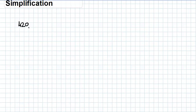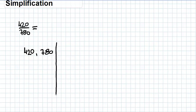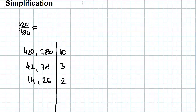When a fraction has very large numerator and denominator, we try to simplify it. For example, 420 over 780. We look for the greatest common divisor: 420 and 780 can both be divided by 10, giving 42 and 78. Both can be divided by 3, giving 14 and 26. Both can be divided by 2, giving 7 and 13. Since 7 and 13 have no common divisor, this is the simplest form. Therefore, 420 over 780 equals seven-thirteenths.